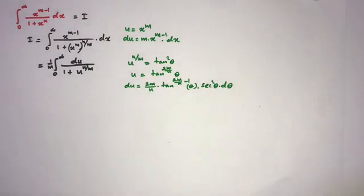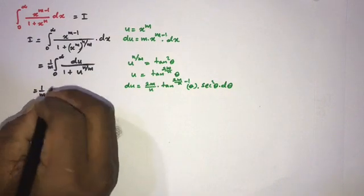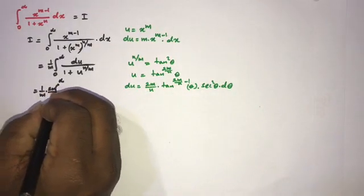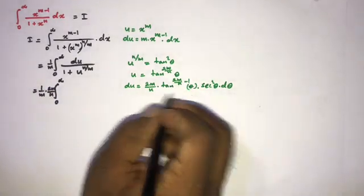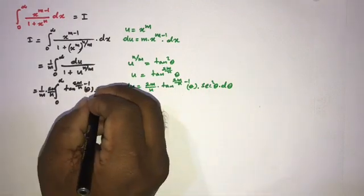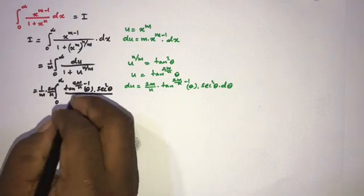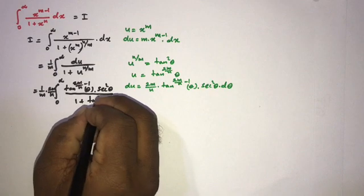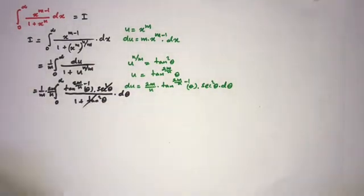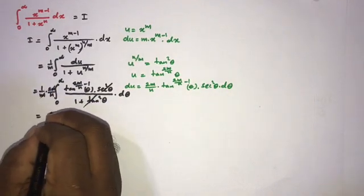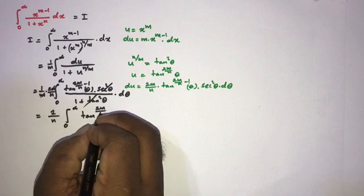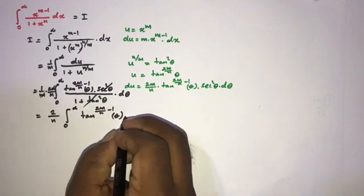Plugging in, we get 1 over m times 2m over n — the constant comes outside — times the integral of tan to the 2m over n minus 1 of theta times secant squared theta over 1 plus tan squared theta, d theta. Since 1 plus tan squared theta equals secant squared theta, the secant squared terms cancel, and the m's cancel, leaving 2 over n times the integral from 0 to infinity of tan raised to 2m over n minus 1 of theta, d theta.